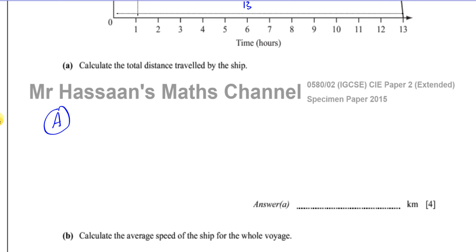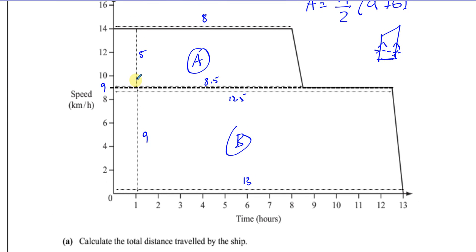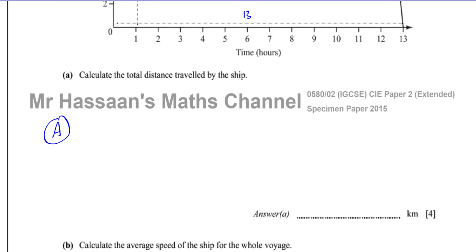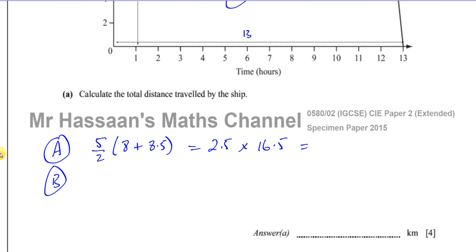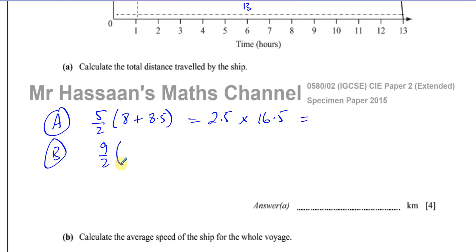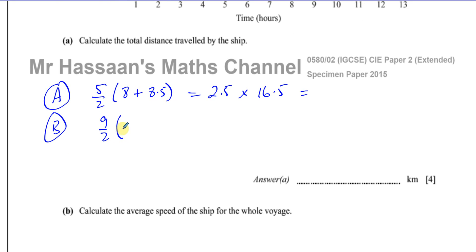So now we can find the area of A. For A, it's going to be 5 divided by 2, times 8 plus 8.5. So 5 divided by 2 times 8 plus 8.5, which is 2.5 times 16.5. And for B, it's going to be 9 divided by 2, times 12.5 plus 13, which is 4.5 times 25.5.